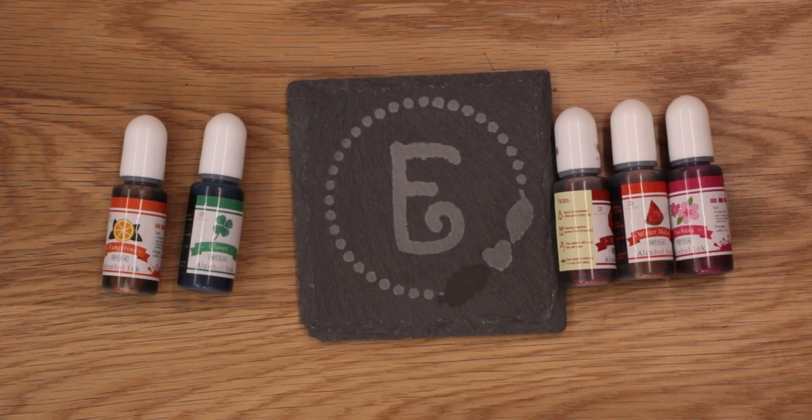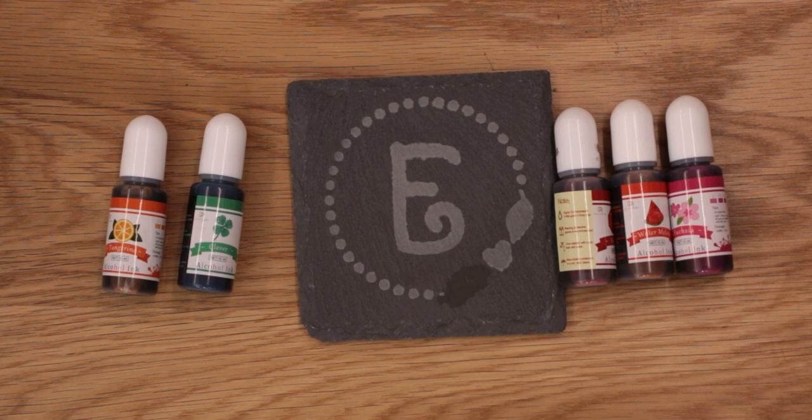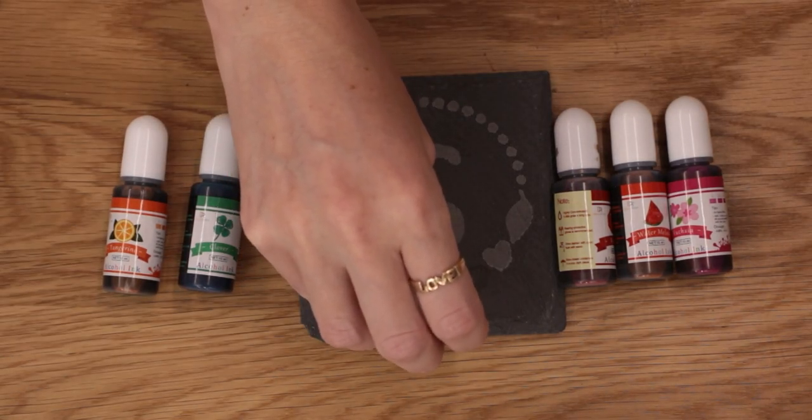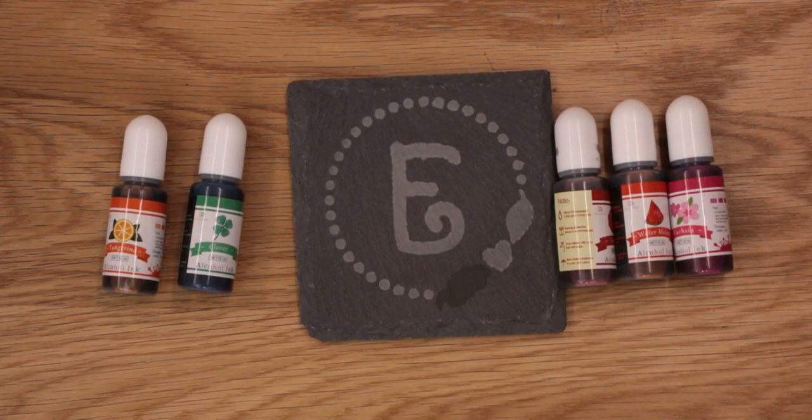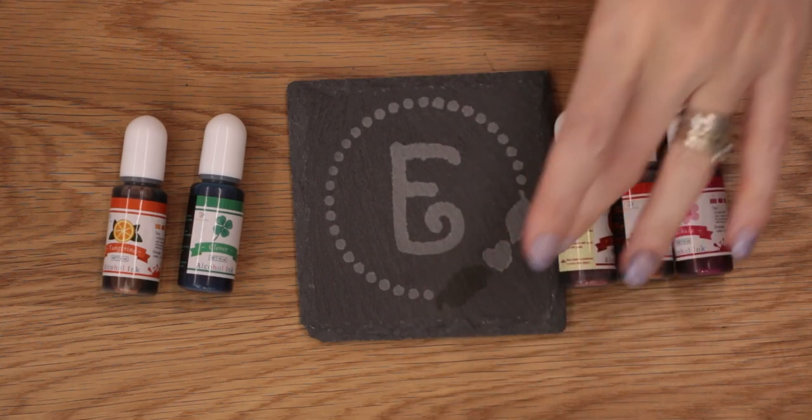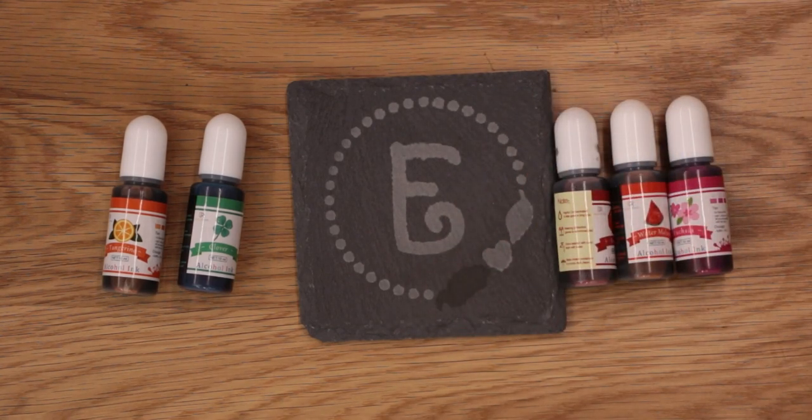If you go over it's not the end of the world. It's going to seep into the black anyway so really you're not going to see it. Obviously different colors may have different effects but if you're working with lighter colors it will just seep into the black of the slate.